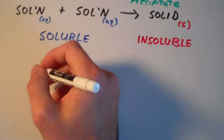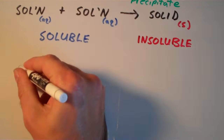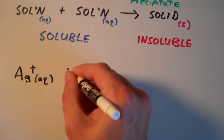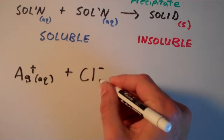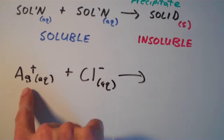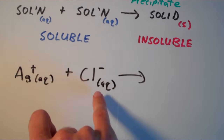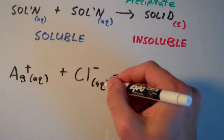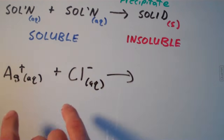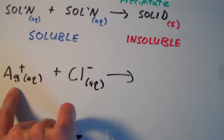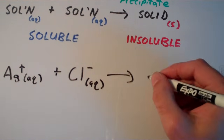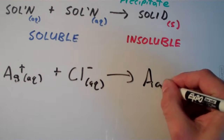Let's go through a simple example on precipitation reactions. Suppose I have silver ion, Ag+(aq), and chloride ion, Cl-(aq). So I have a solution of silver ion and a solution of chloride ion — both dissolved, both aqueous. Upon mixing these two solutions together, I have a silver ion as my cation and a chloride ion as my anion. So the formula for the product is going to be AgCl.